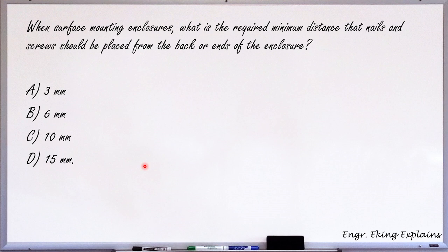when surface mounting enclosure, so what is the required minimum distance that nails and screws should be placed from the back or the ends of the enclosure?